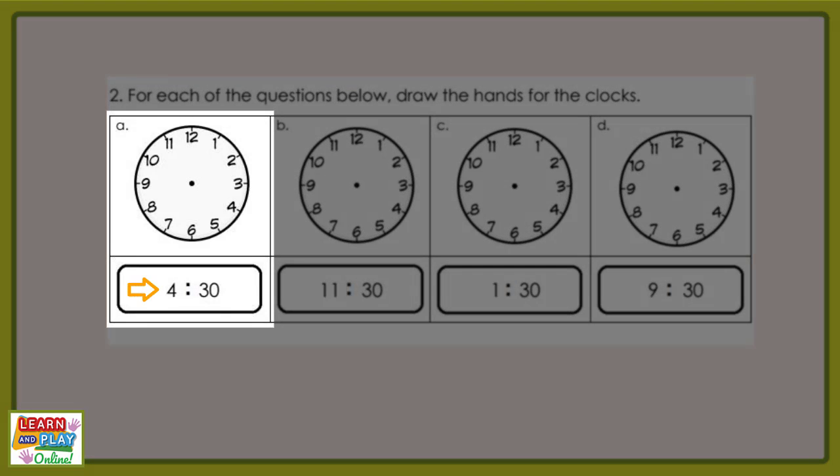The digital time reads 4:30. This means that when we draw our minute hand, it needs to be pointing at the number 6. The hour hand needs to be halfway between 4 and 5.